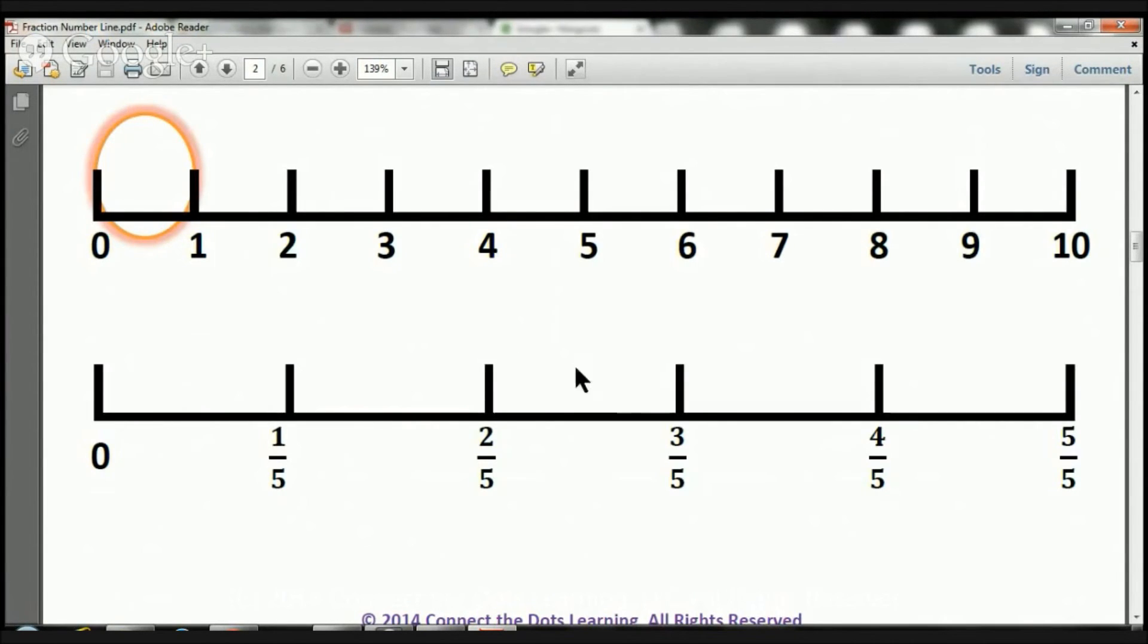One, two, three, four, five. And we're going from zero to one. Remember, zero to one. Five over five equals one. Remember? Great.